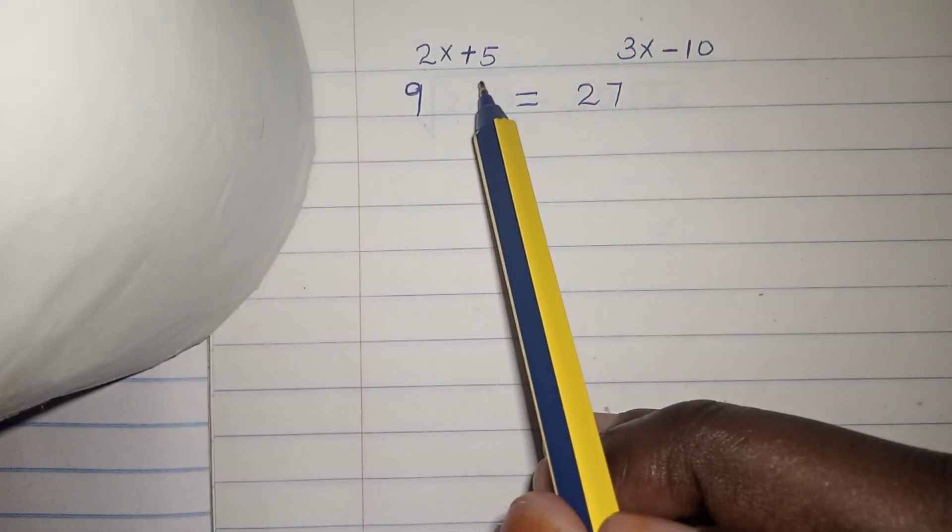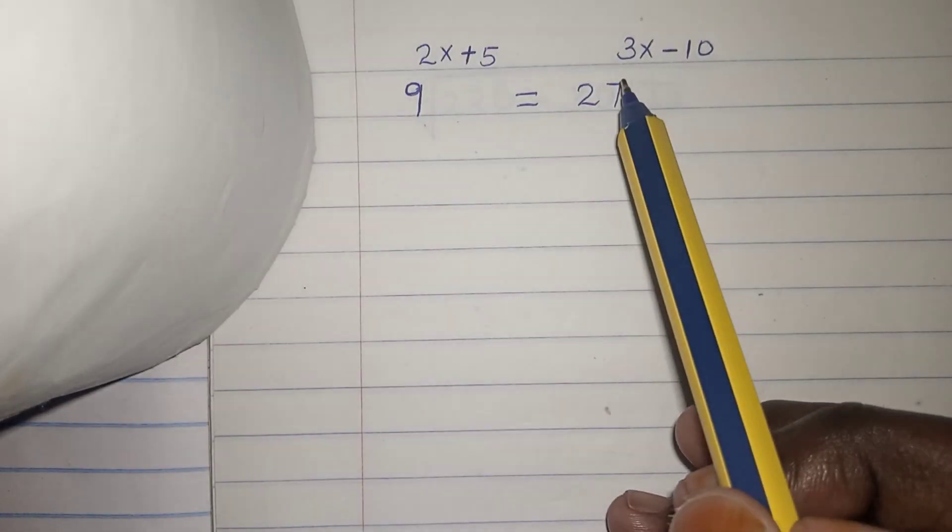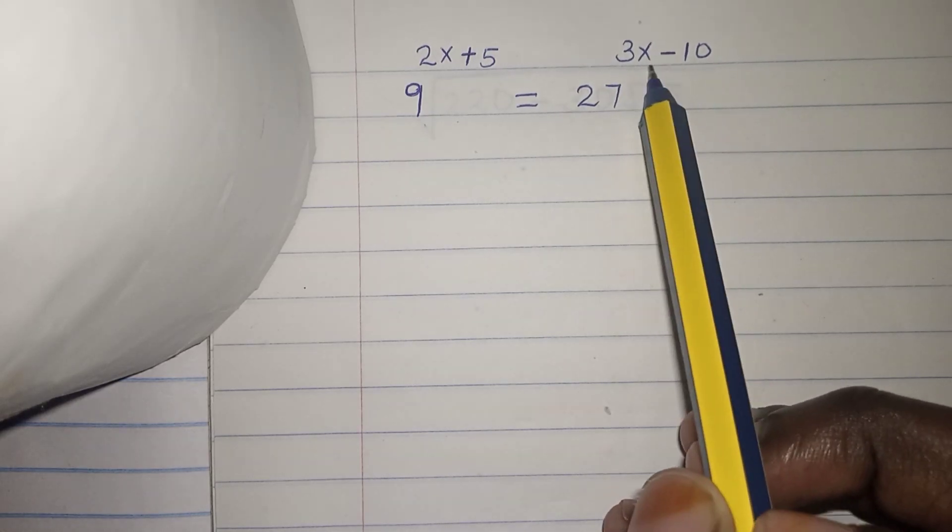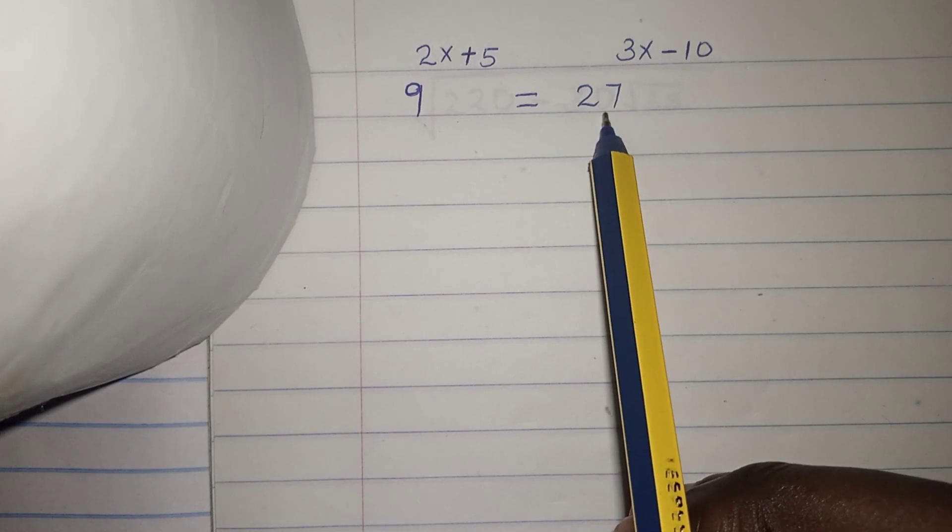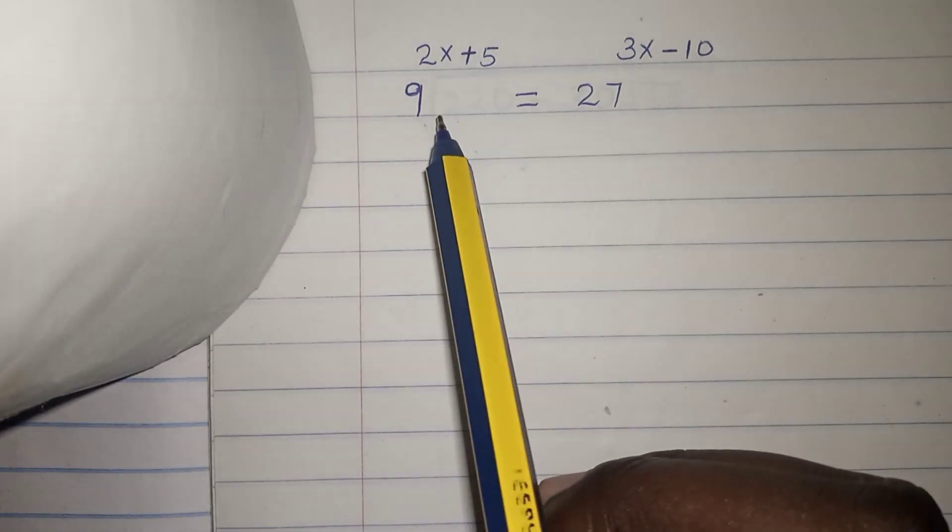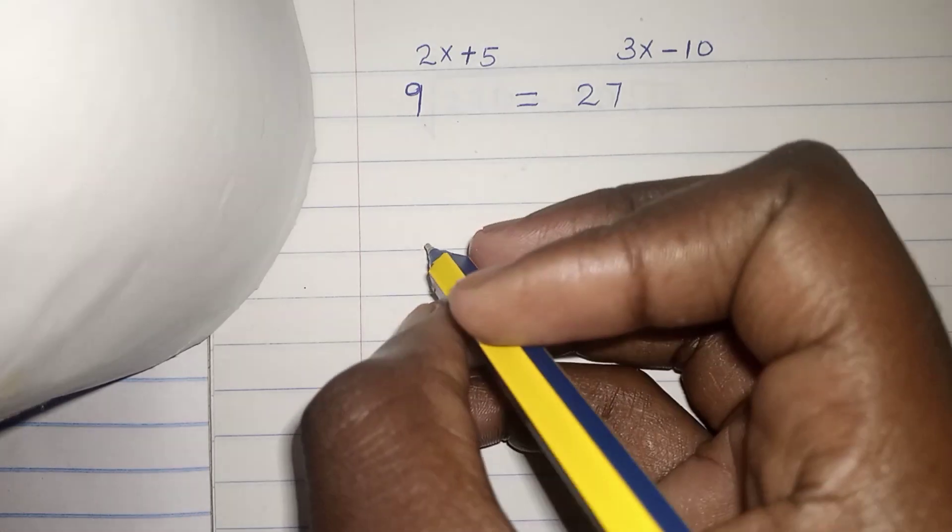We have 9 to the power of 2x plus 5 equals 27 to the power of 3x minus 10. So 9 and 27 are our bases. We can write them to base 3.